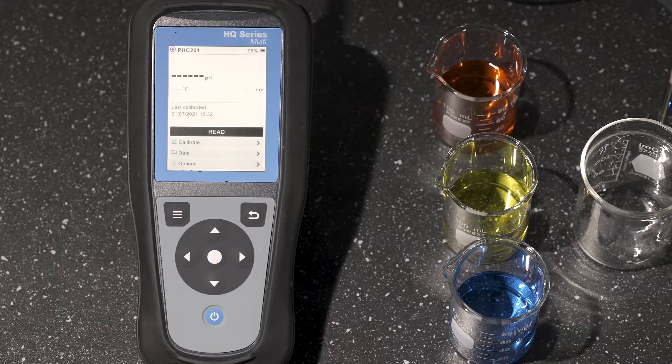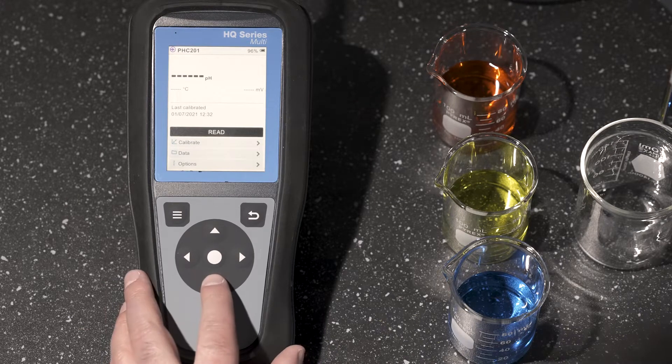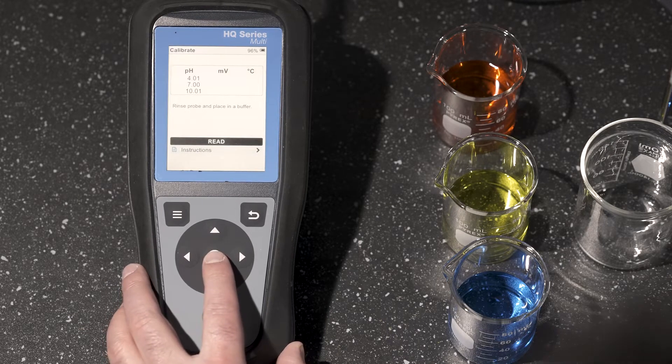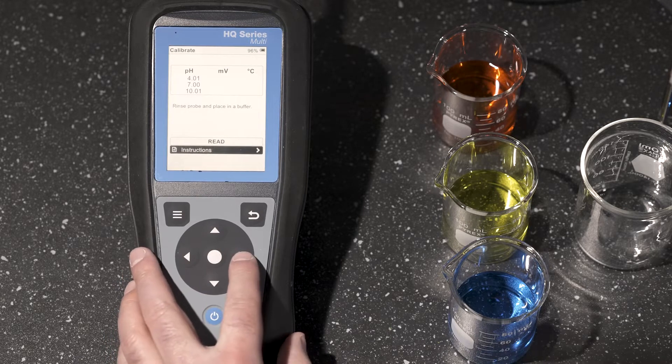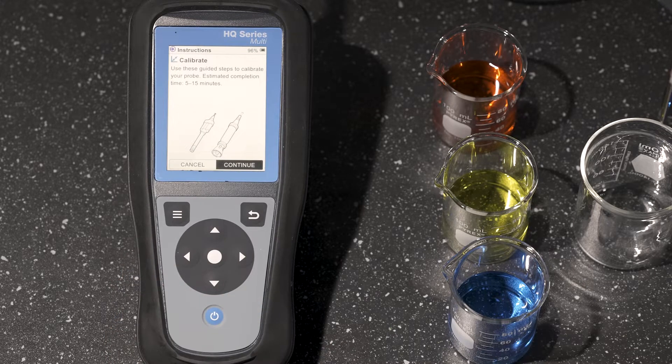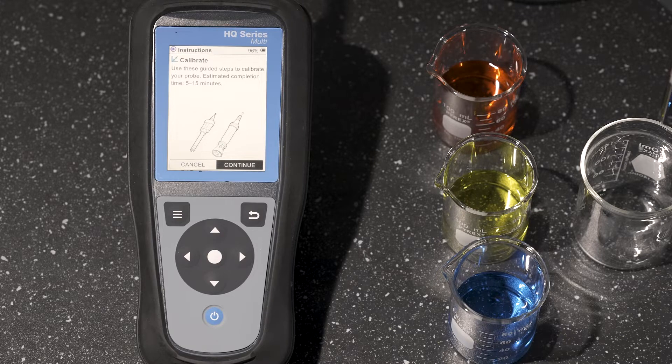Here we are at the home screen of the HQ Series 4300. I'm going to go ahead and highlight calibrate. Here we are at the calibrate screen. I'm going to highlight the instructions and this is going to walk us through those guided steps.